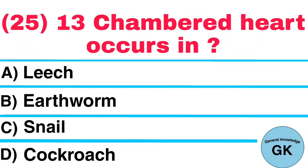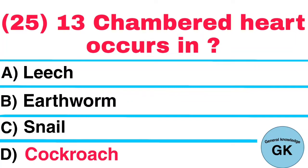Question number 25. Thirteen chambered heart occurs in: A. Leech, B. Earthworm, C. Snail, D. Cockroach. Answer: Cockroach.